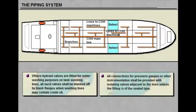All pipe connections for pressure gauges or other instrumentation shall be provided with isolating valves adjacent to the lines unless the fitting is of the sealed type.